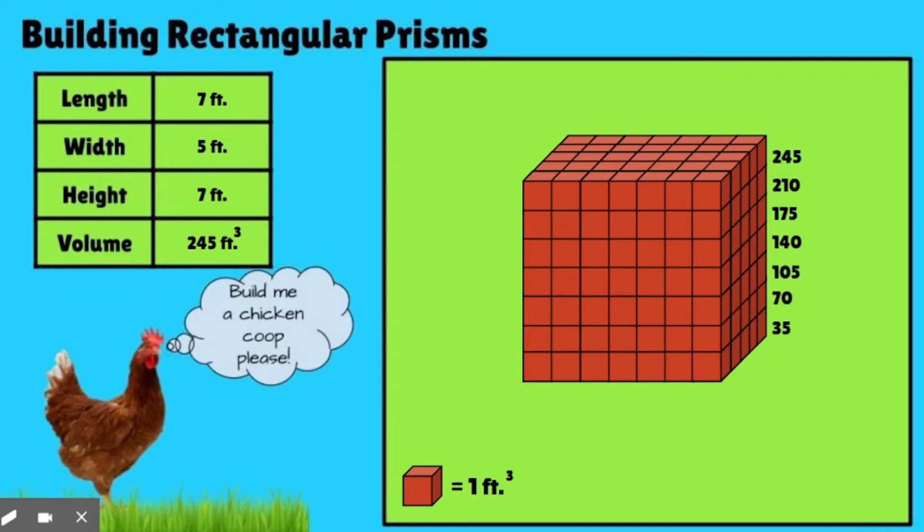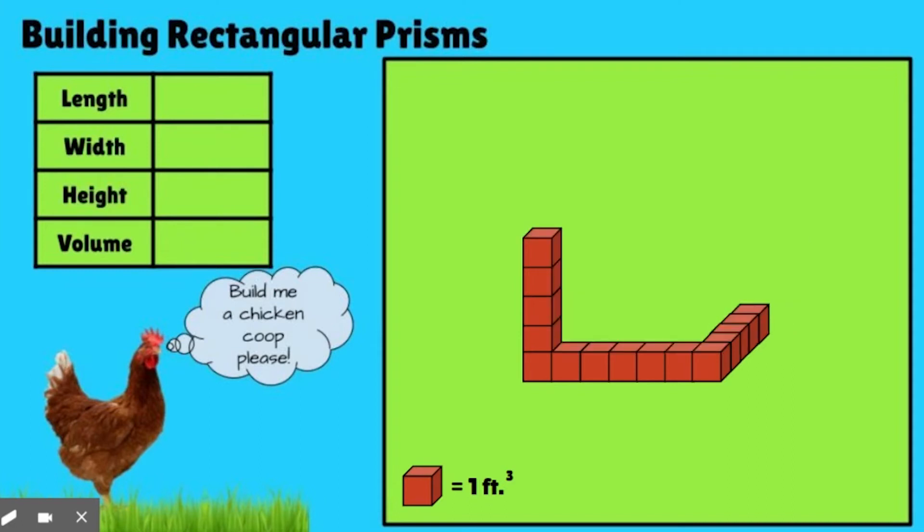Or we can just do some guess and check. 35 times six, 35 times five, and see what those come up with. All right, let's go ahead and go to the next one.